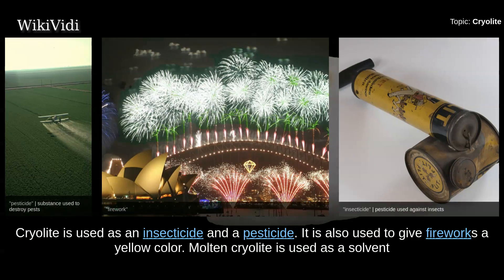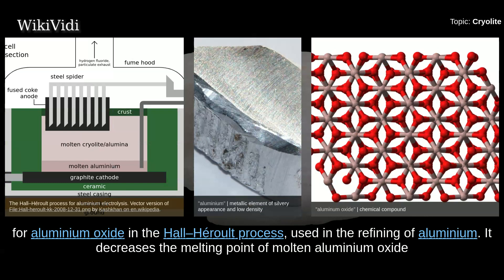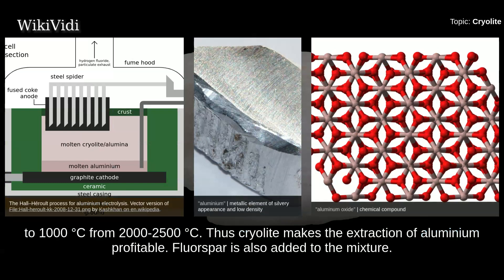Cryolite is used as an insecticide and a pesticide. It is also used to give fireworks a yellow color. Molten cryolite is used as a solvent for aluminium oxide in the Hall-Héroult process, used in the refining of aluminium. It decreases the melting point of molten aluminium oxide to 1000 degrees Celsius from 2000–2500 degrees Celsius, thus making the extraction of aluminium profitable. Fluorspar is also added to the mixture.